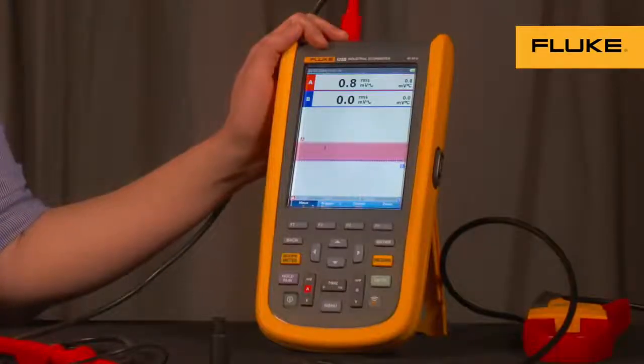The 125B industrial scope meter has the power and harmonics mode, which offers single-phase power measurements with waveform and harmonics display.